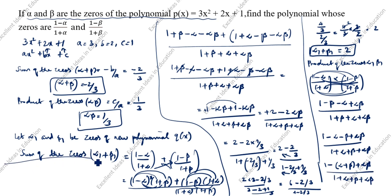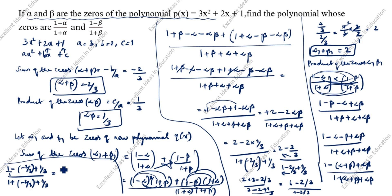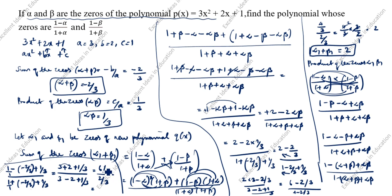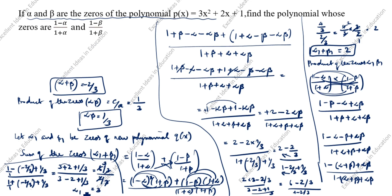Substituting alpha + beta = -2/3 and alpha·beta = 1/3: numerator = 1 - (-2/3) + 1/3 = 1 + 2/3 + 1/3 = 6/3; denominator = 1 + (-2/3) + 1/3 = 1 - 1/3 = 2/3. So alpha₁ × beta₁ = (6/3) ÷ (2/3) = 3.